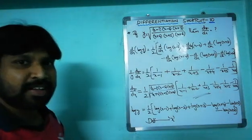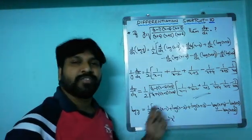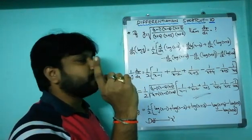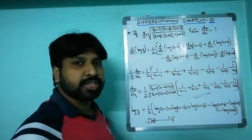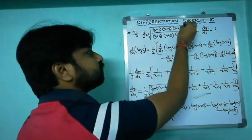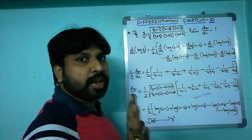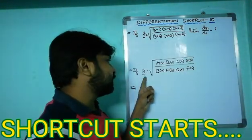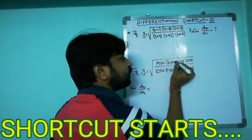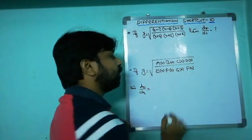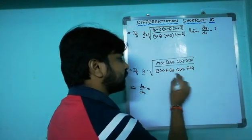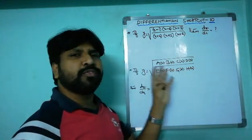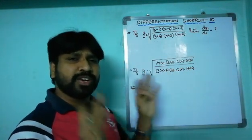That's the full method. Now I want to give the shortcut — within one step we can evaluate this kind of question, no matter how many functions are inside the root. Now I'll reveal the shortcut. If y = √[a(x)·b(x)·c(x)·d(x) / (e(x)·f(x)·g(x)·h(x))], any number of functions — no problem.